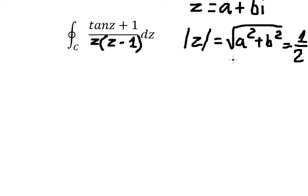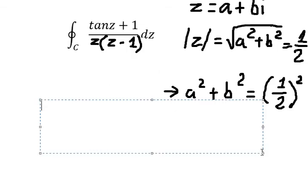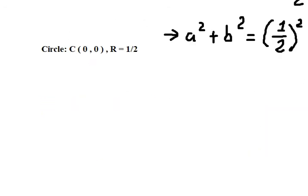If we put the power 2 on both sides, we have a squared plus b squared equals 1 over 2 to the power of 2. We know that this is the equation of a circle with center at (0, 0) and radius 1 over 2. Now we need to draw the circle.